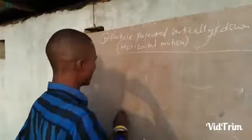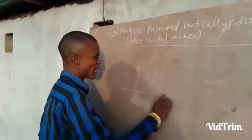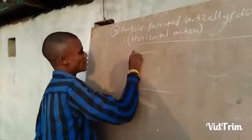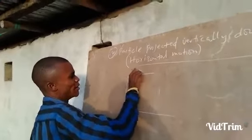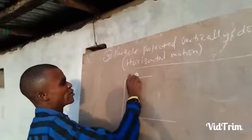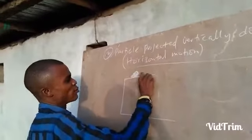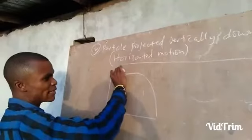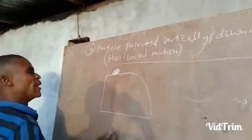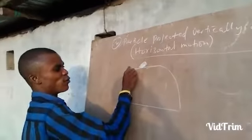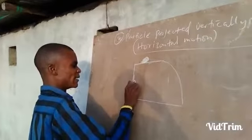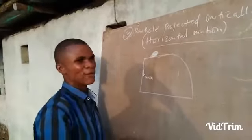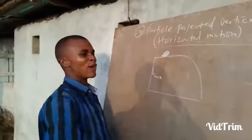Now let us look at the schematic diagram here. Let us say there is an object at the top, and somebody is releasing this object to fall to the ground. The object has been released and is falling. Where that object is from the ground is known as the height — that is the height above the ground.